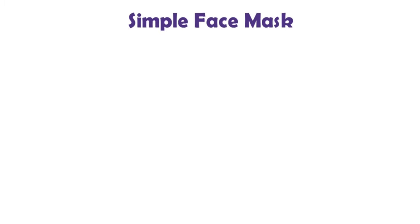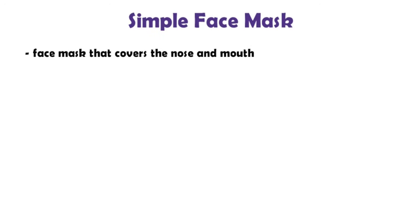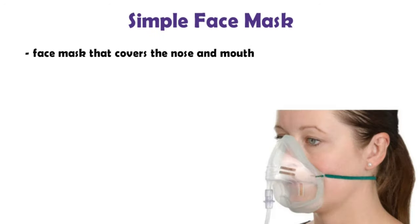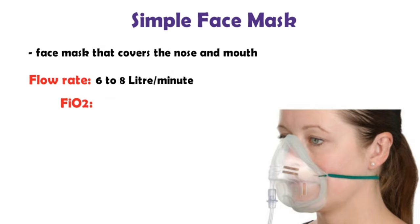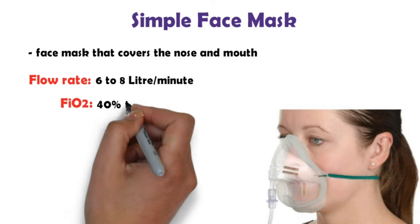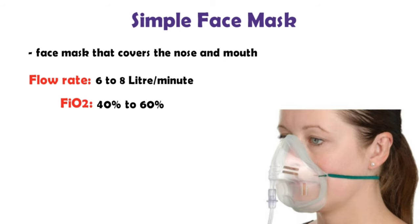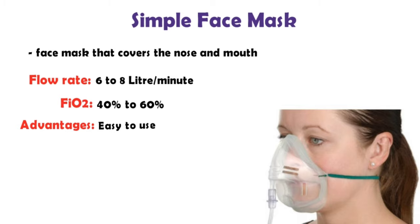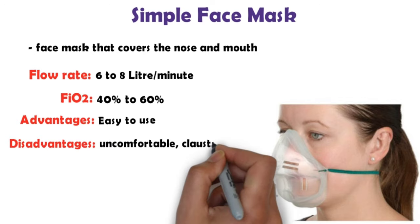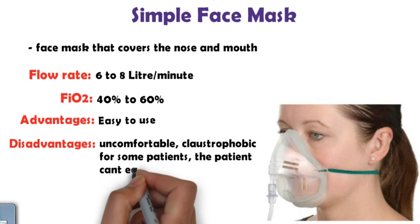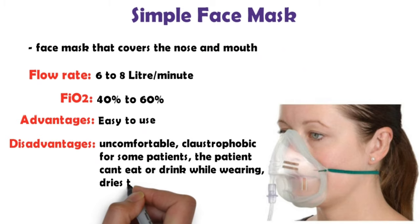Simple face mask — the standard face mask that covers the nose and mouth. Flow rate: 6–8 liters per minute, making it a borderline low flow system depending on how it's used and the oxygen demands of the patient. FiO2: 40–60%. Advantages: easy to use. Disadvantages: uncomfortable and claustrophobic for some patients; the patient cannot eat or drink while wearing it, and it dries the nostrils.